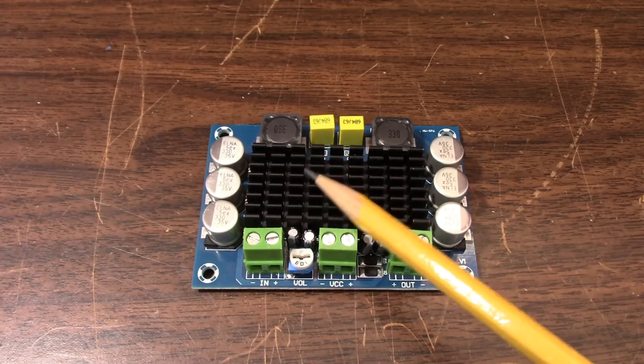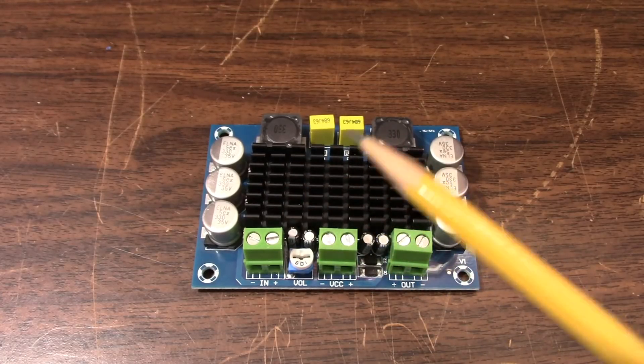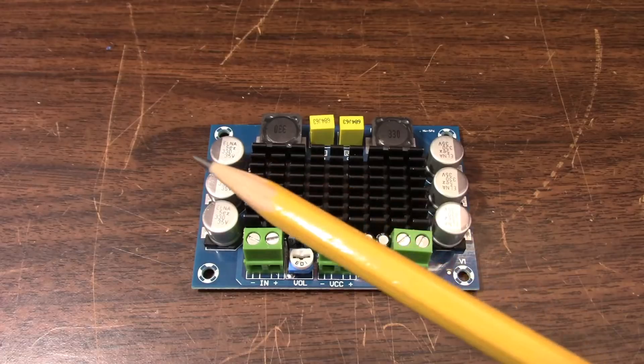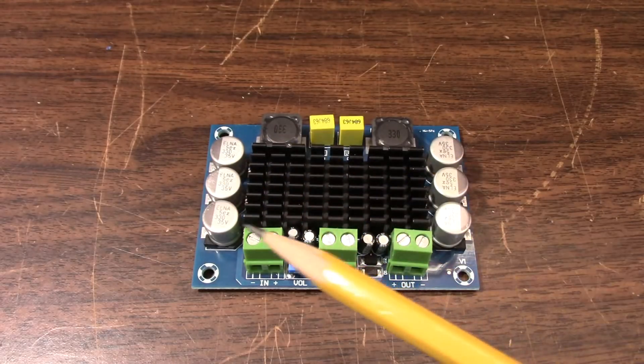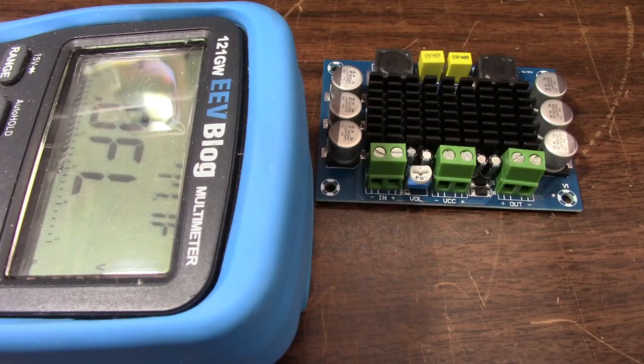So according to the datasheet, you should be able to handle 2 ohm loads. No problem there. However, that's the chip. Is it capable of handling that on this board as it's been designed?